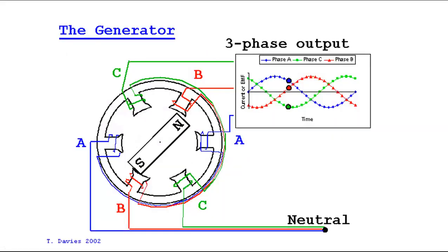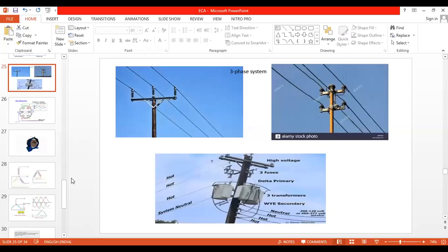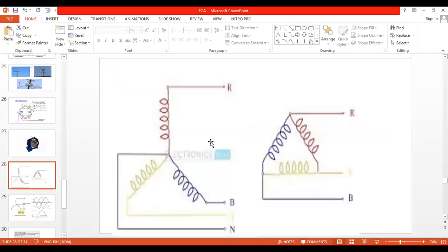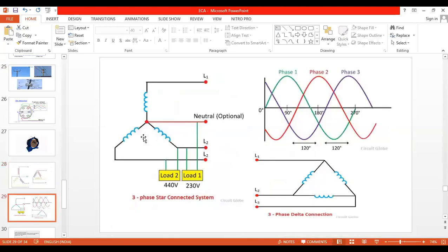Now let us move to today's topic. All transmission lines in real time can be represented by three-phase system, which can be visualized as star or delta. What is the definition of line voltage? The voltage present between any two lines is called the line voltage, and line voltage equals root 3 times phase voltage. If you connect a voltmeter between any two lines it will indicate the line voltage.